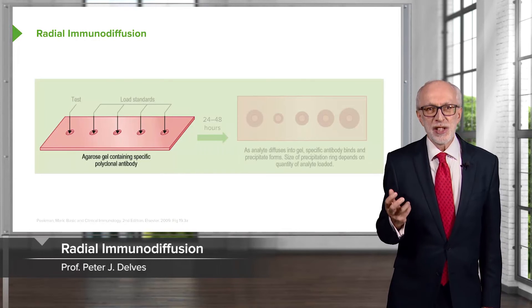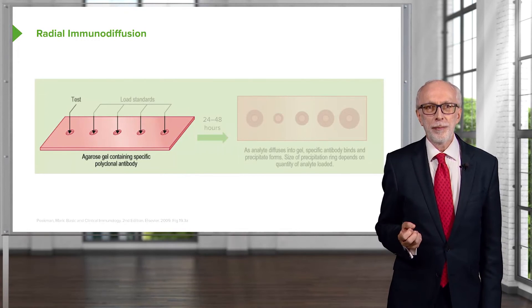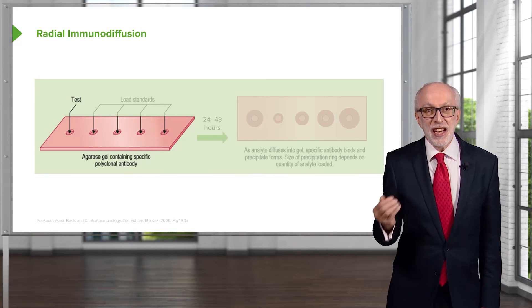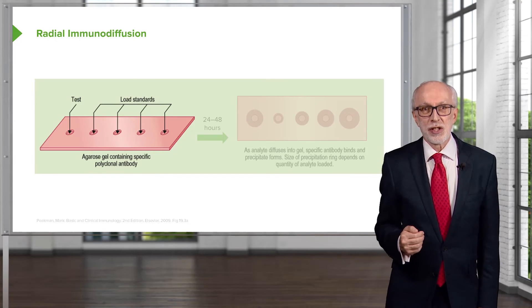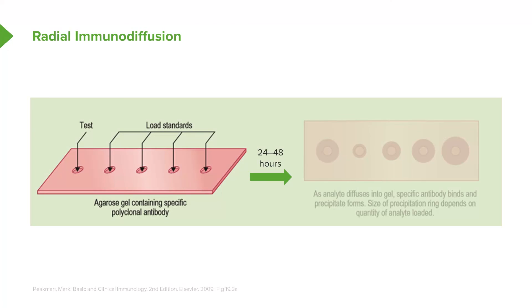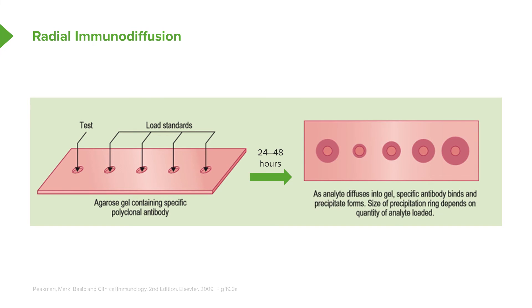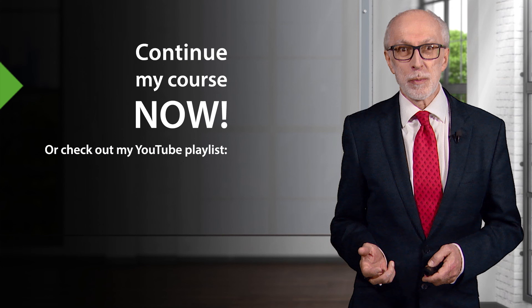In radial immunodiffusion, there is an agarose gel containing specific polyclonal antibody. Wells are cut into the gel and the test sample is added to one of the wells. There are also standards with defined concentrations of the antigen added to the gel. After 24 to 48 hours, precipitin rings will be produced. As the analyte diffuses into the gel, specific antibody binds and the precipitate forms. The size of the precipitation ring depends on the quantity of analyte loaded.